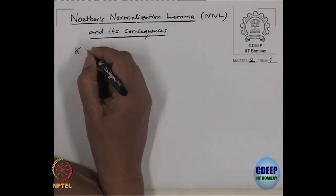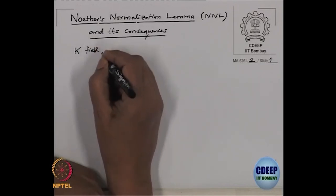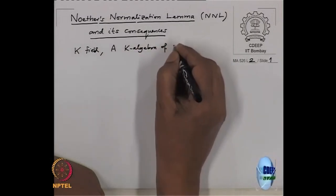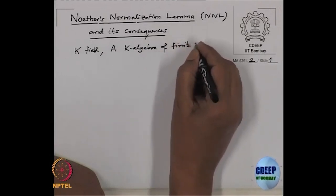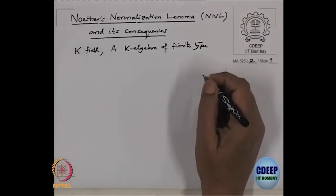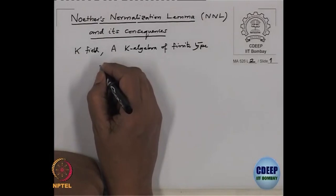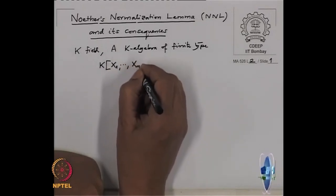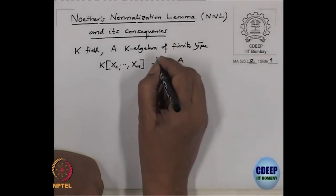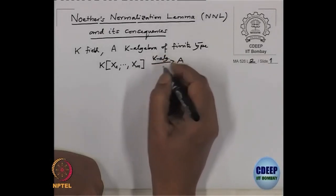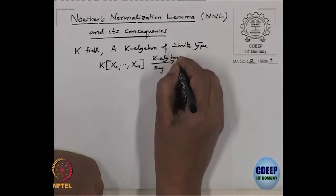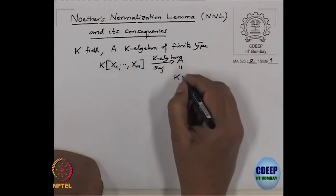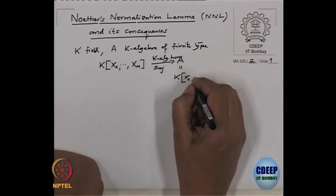The setup is: K is always a field and A is a K-algebra of finite type. A K-algebra of finite type simply means that there is a surjective K-algebra homomorphism from the polynomial ring in finitely many variables to A. This means A is the K-algebra generated by the images of capital X's, which I will denote by small x's.